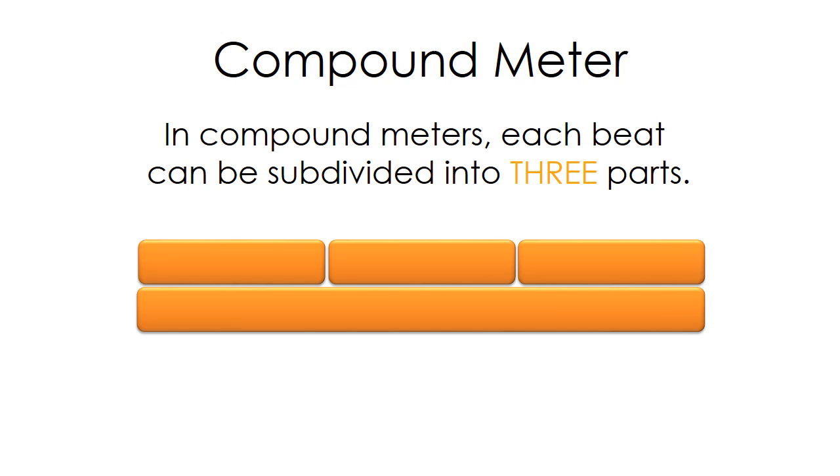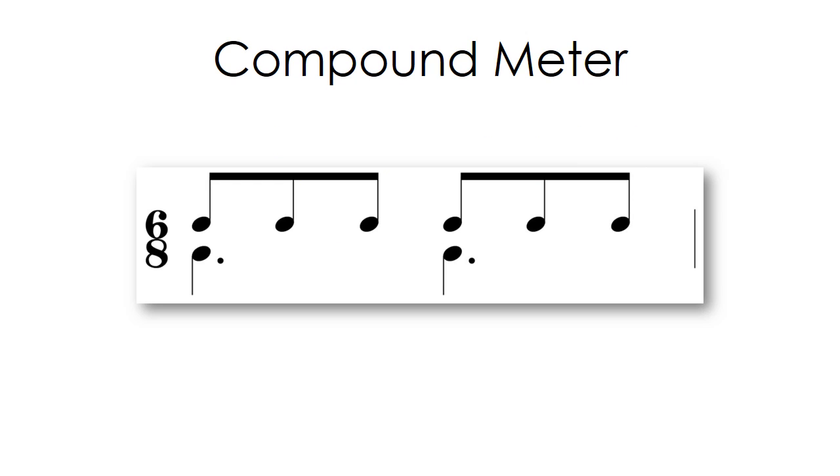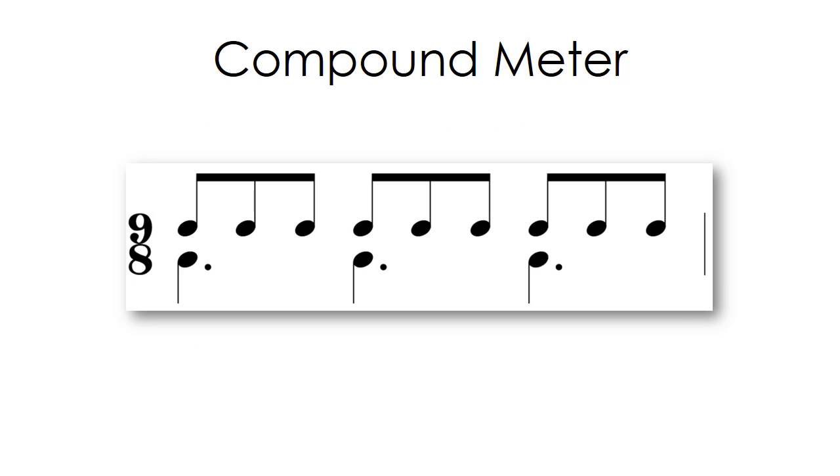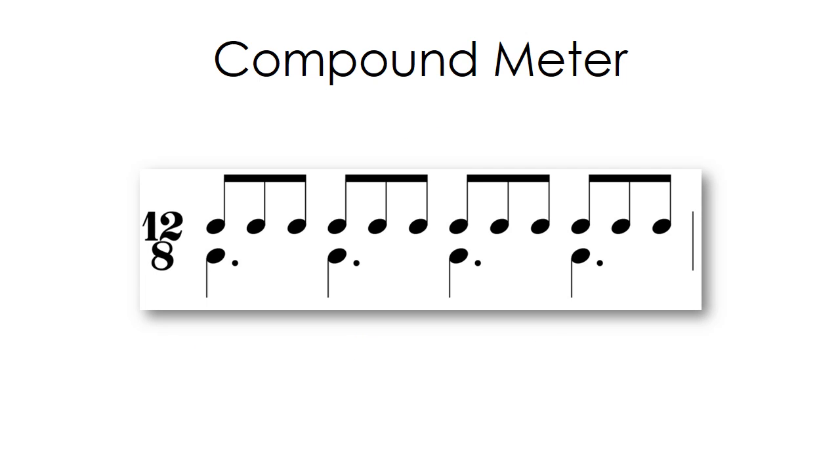A compound meter is characterized by the division of each beat into three parts. Like simple meters, compound meters can be duple, triple, or quadruple.